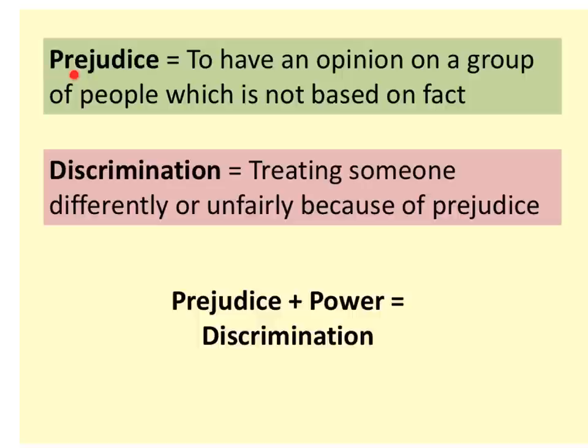We should all know these definitions already. Prejudice is to prejudge without sufficient reason — to have an opinion with no fact, no sufficient reason. There can never be a sufficient reason to prejudge an entire group with just a stereotypical characteristic. Discrimination is treating somebody differently — it is acting on prejudice. So prejudice leads to discrimination.